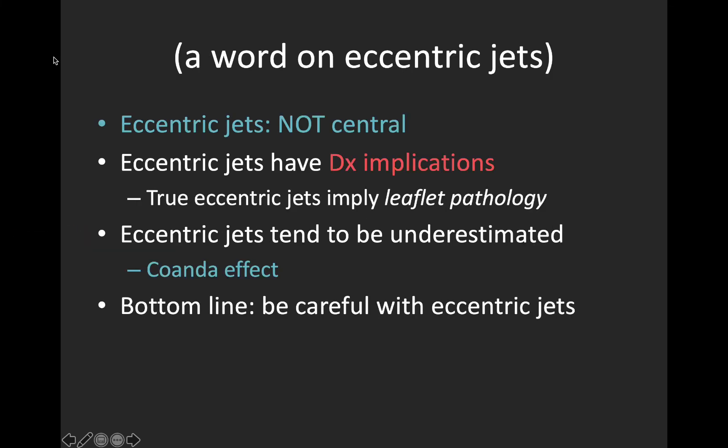A quick interlude to talk about eccentric jets. Most regurgitant jets, especially MR, are central — eccentric means the jet is directed off to one side or the other. Eccentric jets have diagnostic implications, implying pathology of the valve leaflets themselves, as opposed to the more common secondary central MR due to a dilated mitral annulus in heart failure. They will also be underestimated both qualitatively and quantitatively, in part due to something called the Coanda effect.